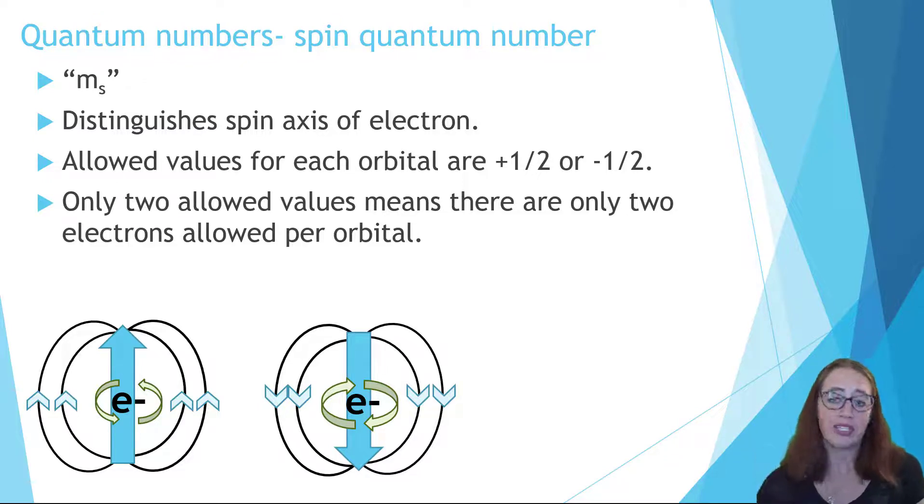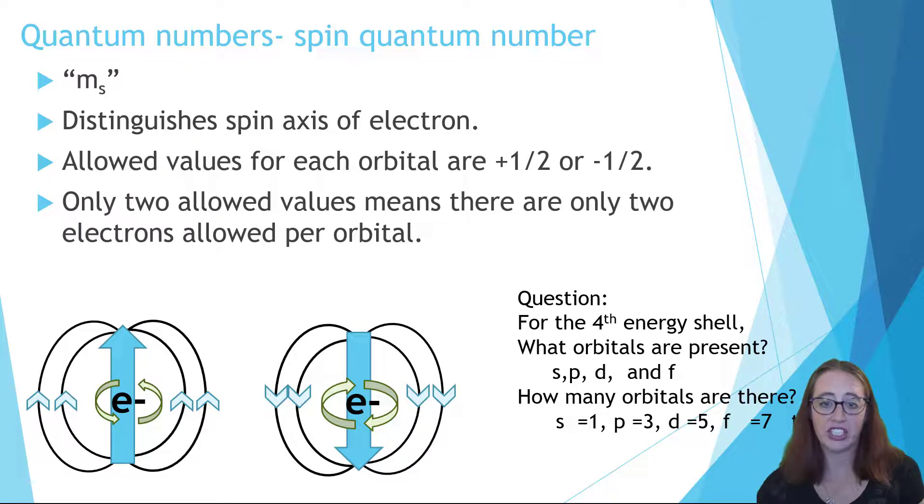So let's continue with the discussion on the fourth energy shell. We've decided which orbitals can be present. We know how many orbitals are present. Now let's figure out how many electrons maximum would be allowed in the fourth energy shell. If we have 16 orbitals and there are two electrons per orbital, that leaves us with 32 electrons that are allowed.